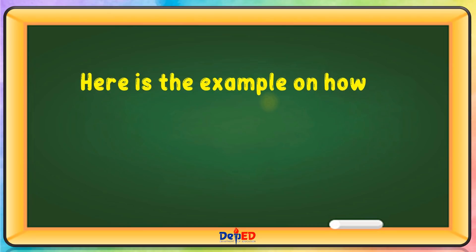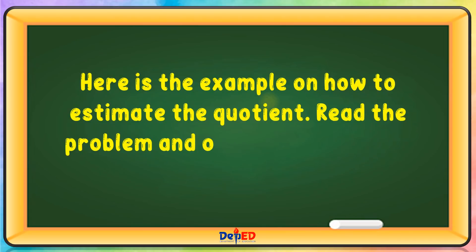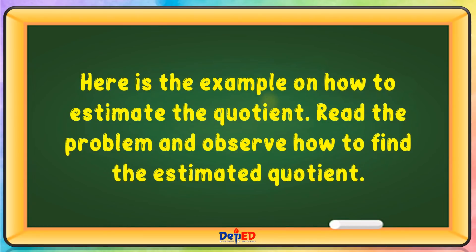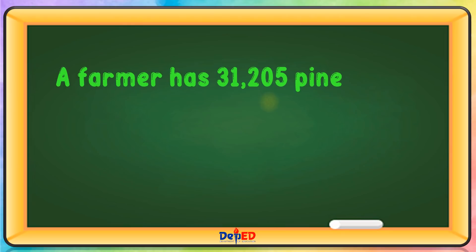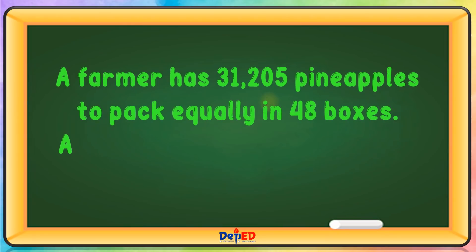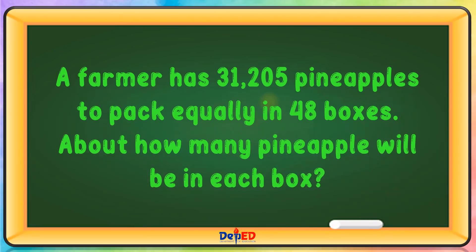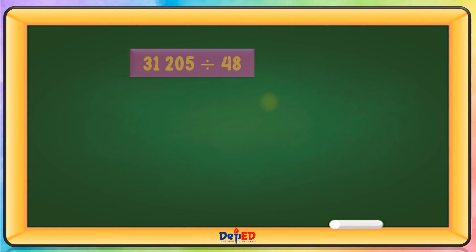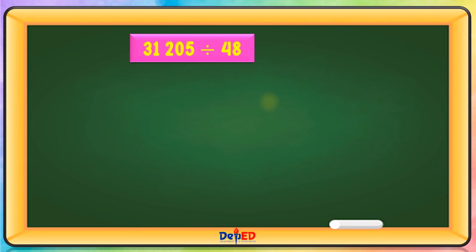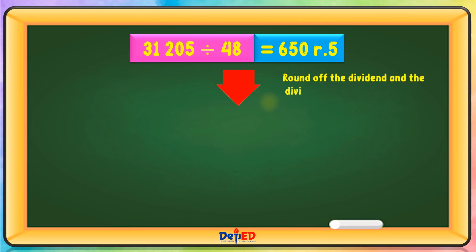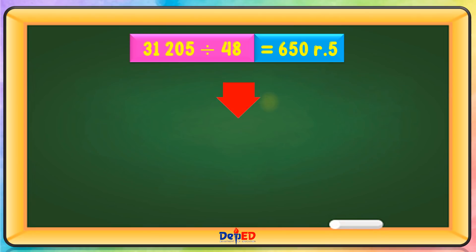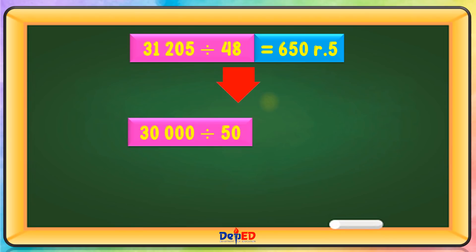Here is the example on how to estimate the quotient. Read the problem and observe how to find the estimated quotient. A farmer has 31,205 pineapples to pack equally in 48 boxes. About how many pineapples will be in each box? 31,205 divided by 48 equals 650 remainder 5. First, round off the dividend and the divisor to their highest place value. It will become 30,000 divided by 50.